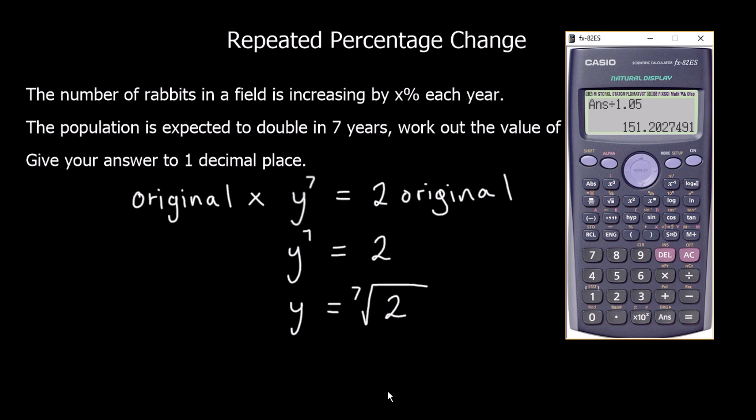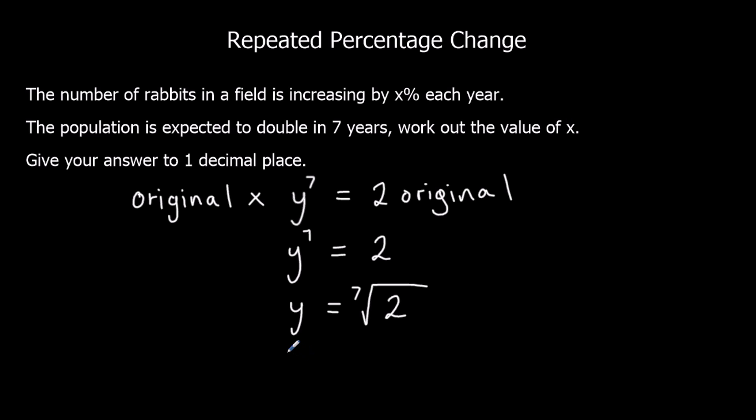So we grab the calculator. So there's a button above this one. See that in yellow. So we shift that. So we can put in whatever root we want. So we want the seventh root of two. The seventh root of two. And that gives us 1.104. So 1.104. So that's Y equals 1.104, and that's to 3 decimal places.